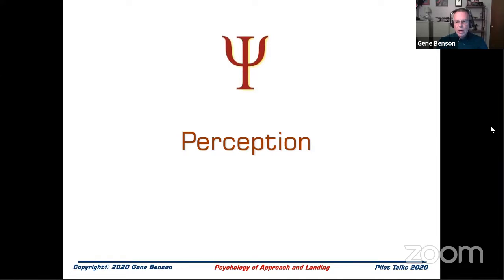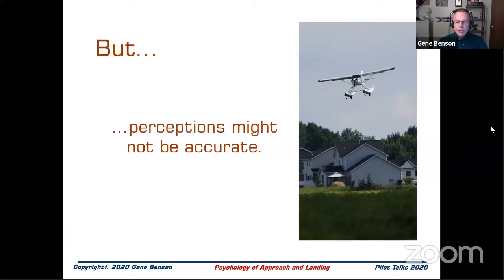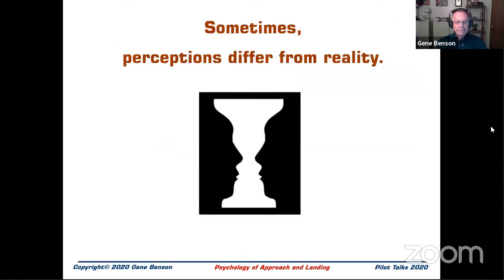Our objectives: we want to learn about three psychological principles that may affect how a pilot conducts an approach and landing, and learn how to prevent these principles from interfering with a safe approach and landing. Let's first talk about perception. Perception is the process of attaining awareness and understanding of our sensory information. Our perceptions are formed by the brain — it gives meaning to the messages received through our five senses.